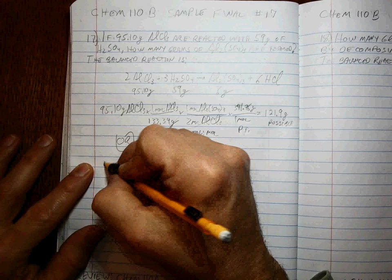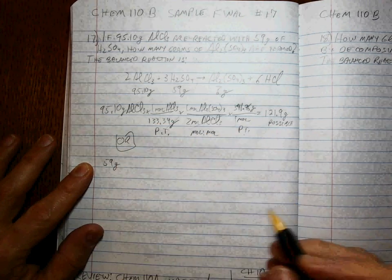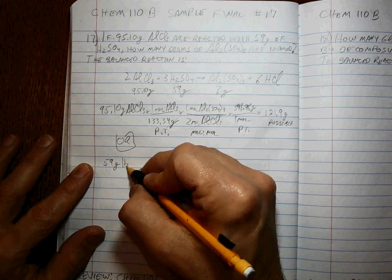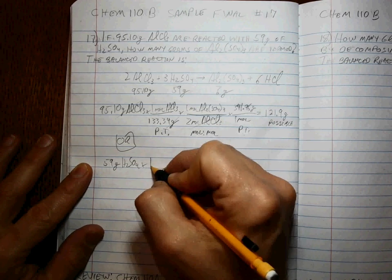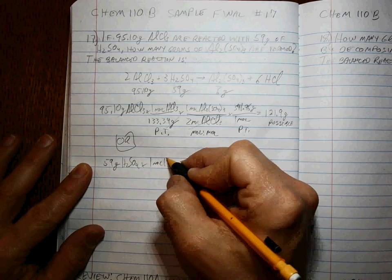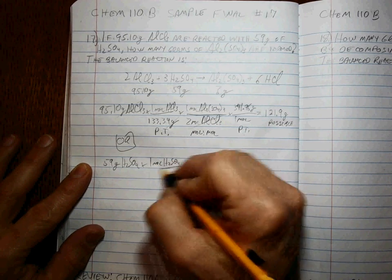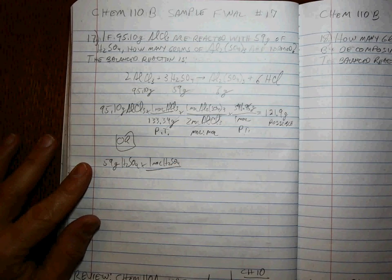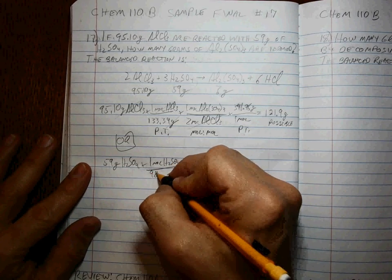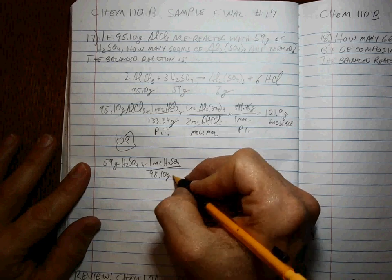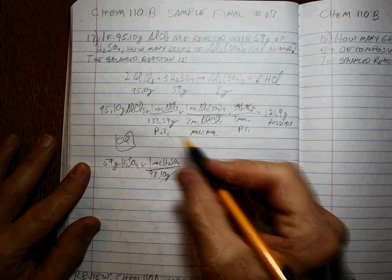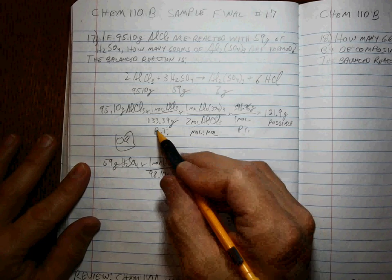59 grams of sulfuric acid will react. How many moles is that? You have to divide by the molar mass, which is 98.10 grams. That's off the periodic table as well.